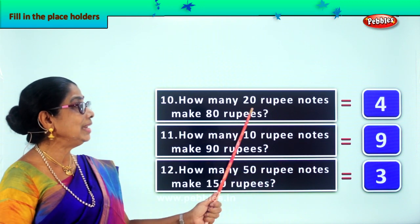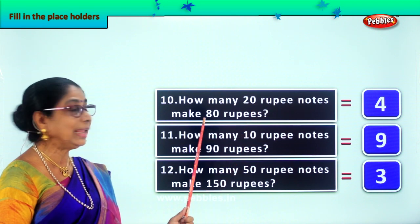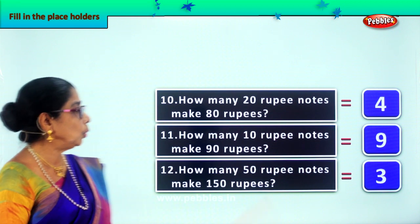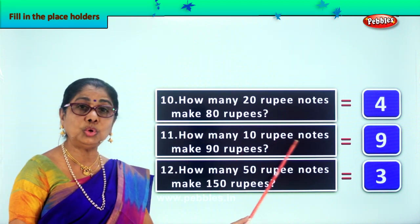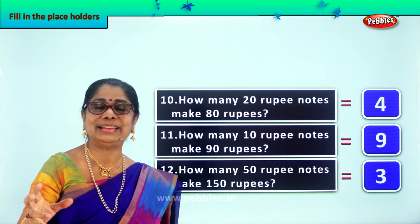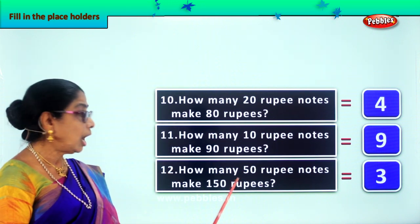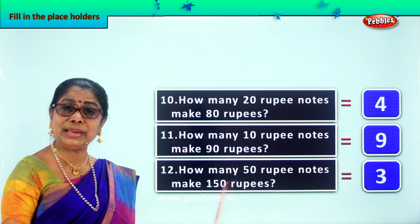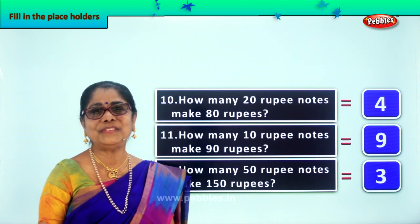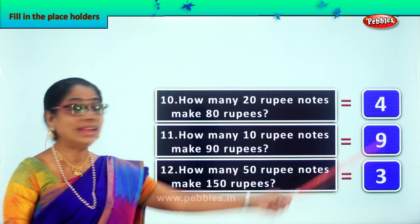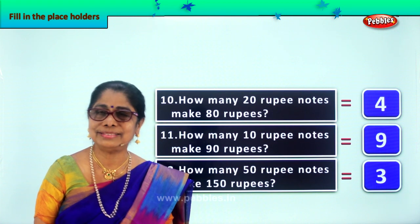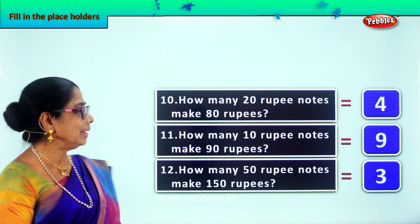Look at all this. We need how many 20-rupee notes to make 80 rupees? We need 4 twenty-rupee notes. How many 10-rupee notes do we need to make 90 rupees? We need 9 ten-rupee notes. And how many 50-rupee notes do we need to make 150? We need 3 fifty-rupee notes to make 150. Did you enjoy filling in the placeholders?